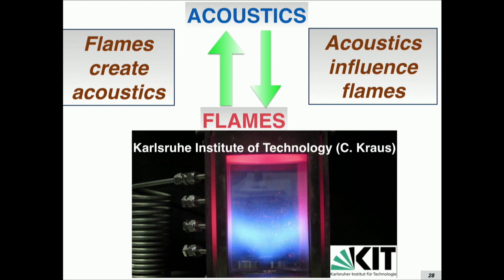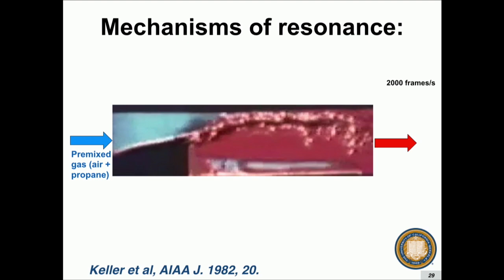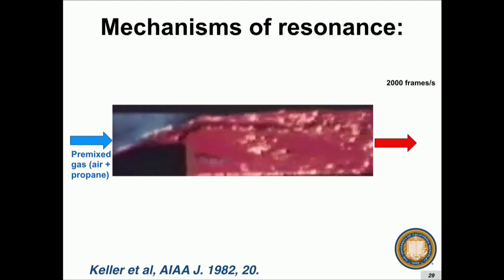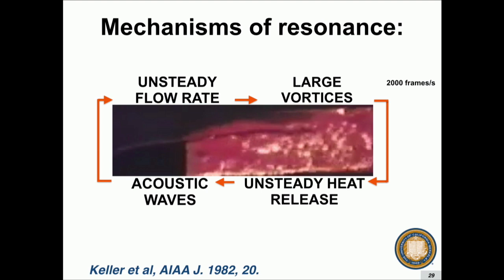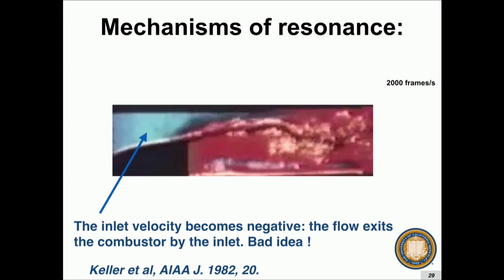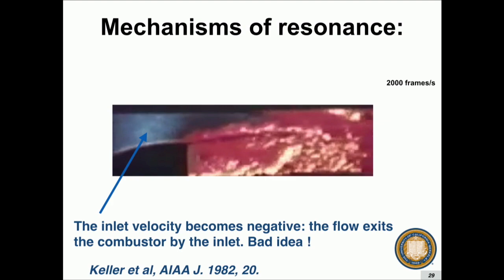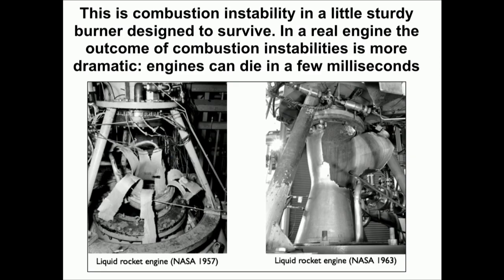We have an idea of the mechanisms. This is a view at high speed — 2,000 frames per second — of what's happening in the flame. The flame should be sitting here: this is cold at 300K, this is hot at 2,000K. The flame is actually moving in the wrong direction from time to time, due to the coupling between the acoustic field and the flame. At some point in this movie, the flame is carried out here because the inlet velocity becomes negative — in other words, the flow is going out through the inlet, which is not good.